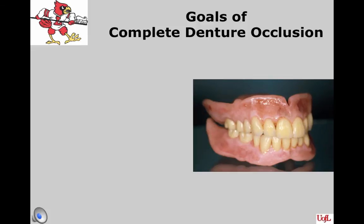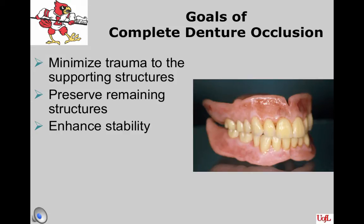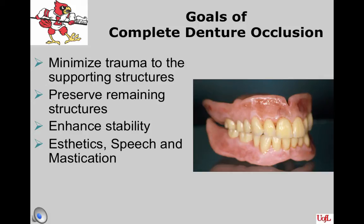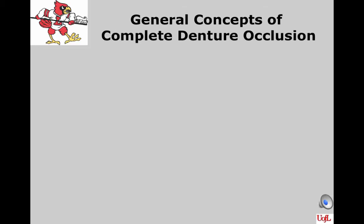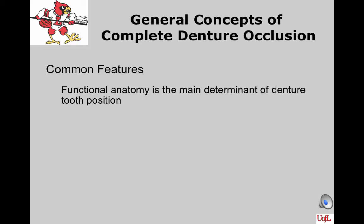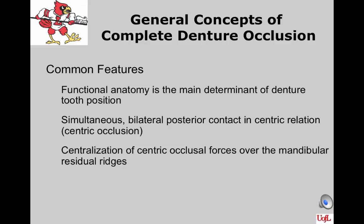The goals in deciding on complete denture occlusion are: minimize trauma to supporting structures, preserve remaining structures, enhance stability, optimize aesthetics and speech, enhance mastication, and decrease lateral forces on the residual ridges. General concepts include: functional anatomy as the main determinant of tooth position and occlusion type, simultaneous bilateral posterior contact in centric relation, and centralization of centric occlusal forces over the mandibular ridges — both buccal-lingually and anterior-posteriorly.